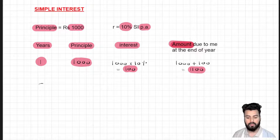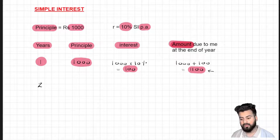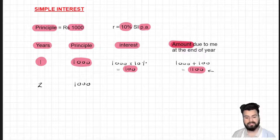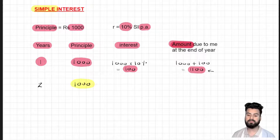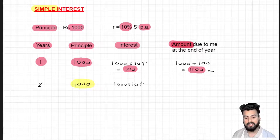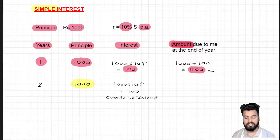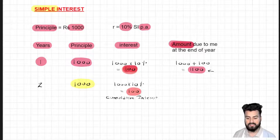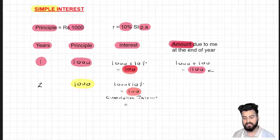Now for the second year — what is the principal? Although the amount at the end of the first year was 1100, the principal at the start of the second year remains the same: 1000. As the name 'simple' suggests, the value of principal never changes for any given year. So the interest is again 10% of 1000, which is 100. The cumulative interest in two years is 100 plus 100, equaling 200 rupees. The amount due at the end of the second year is 1000 plus 200, which is 1200.